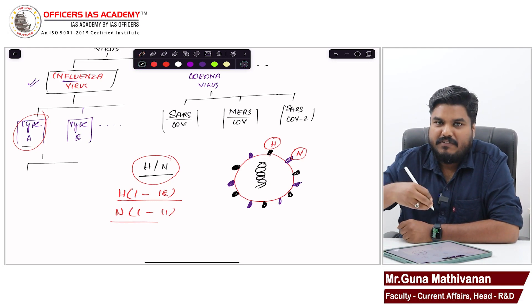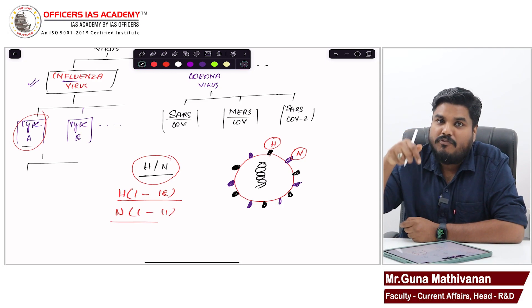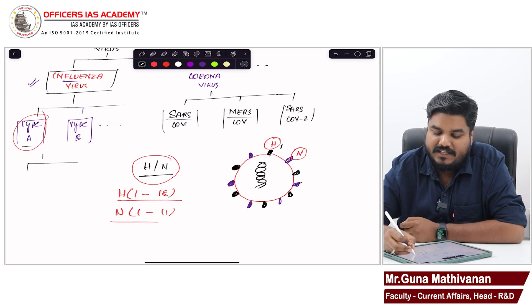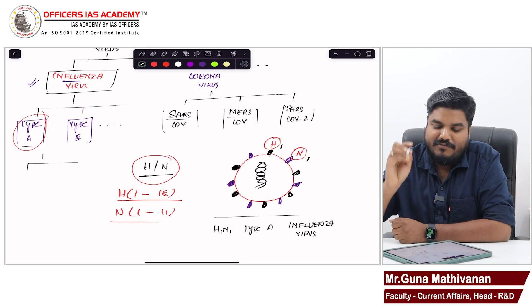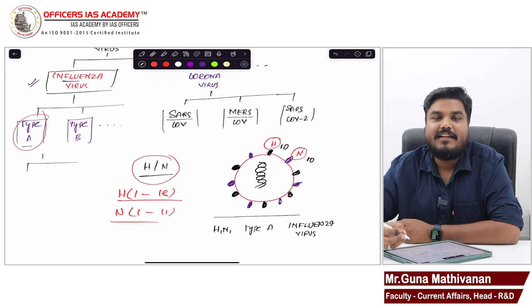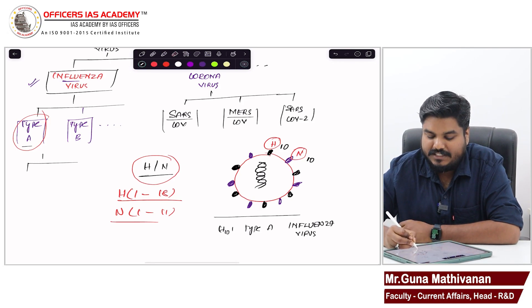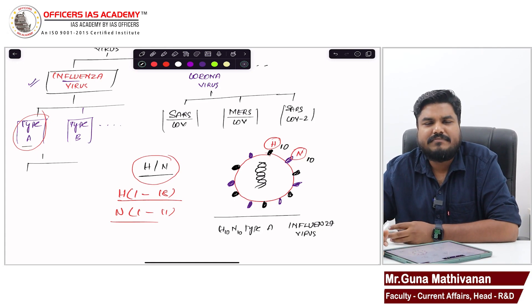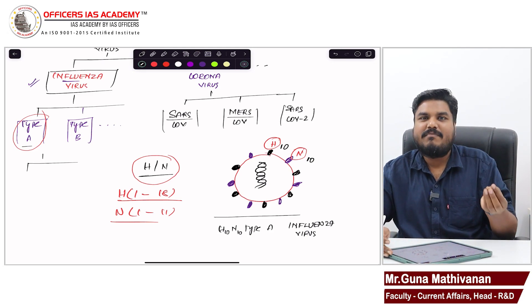The H protein is divided into 18 types and the N protein into 11 types. When I want to find the exact virus type, I will find out which type of protein. If it says H1 and N1, I will call this virus H1N1 type A influenza virus. If I have H10 and N10 protein, I will name it H10N10 virus. Simple.